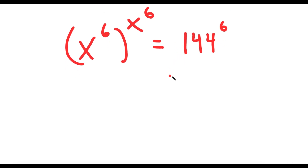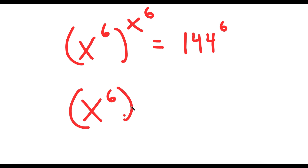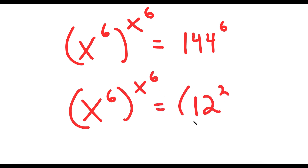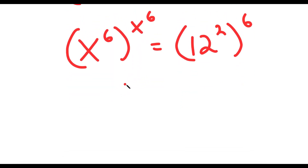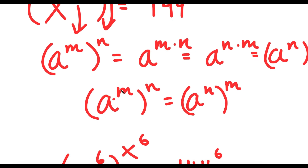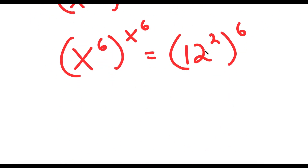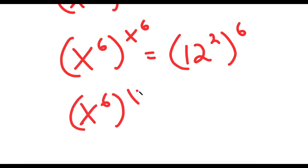So now from here, 144 is the same thing as 12 squared. So I get x to the power of 6 to the power of x to the power of 6 is equal to 12 squared to the power of 6. And remember, if I have something in the form a to the power of m to the power of n, this is equal to a to the power of m times n. So 12 to the power of 2 to the power of 6 equals 12 to the power of 2 times 6, which is 12 to the power of 12.